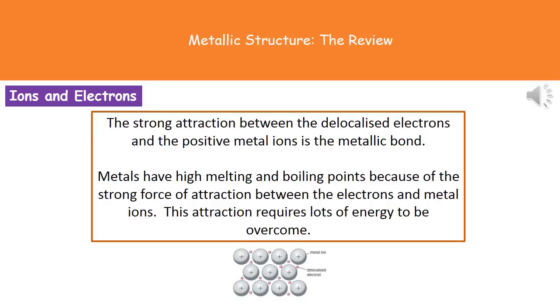So because we've got this very strong force of attraction between the electrons and the metal ions. Then we end up requiring a large amount of energy to overcome it. So because we need a large amount of energy to overcome that force of attraction. Then that means that to change the state of our metal. We're going to need very high amounts of energy. Which means we're going to have a high melting point and a high boiling point.